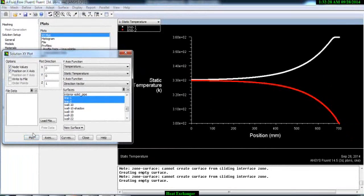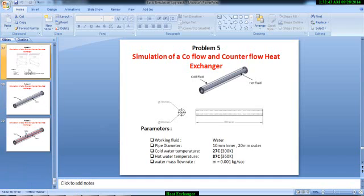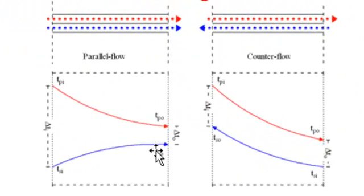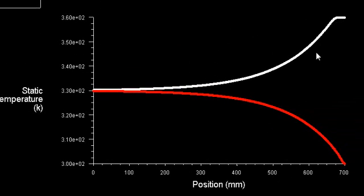Select Line 2 and Plot. Here you can see the temperature distribution of the hot fluid and the cold fluid, which matches the expected result for parallel flow: the hot fluid temperature goes down and the cold fluid temperature goes up. The white line shows hot fluid temperature dropping from 360 K to about 332 K, and the cold fluid temperature rising from 300 K to 331 K. In the next section we will see the same problem but for counter flow.